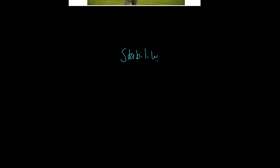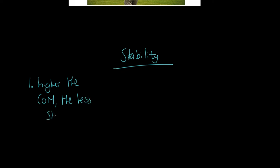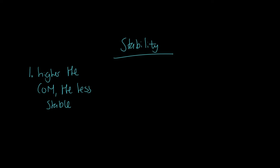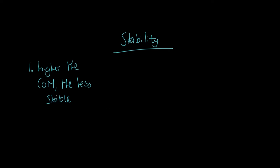Now let's talk about stability and its relationship to center of mass. Principle one: the higher the center of mass, the less stable. Consider this person in a squat position holding weight above their head — once they stand upright, they raise their center of mass and become less stable. Think of a gymnast in a handstand: they are more stable when their legs are bent at the hip and knee, because they've brought their center of mass further downwards.